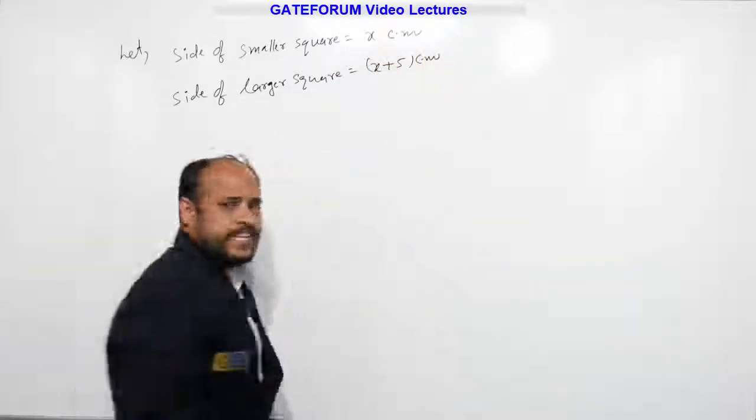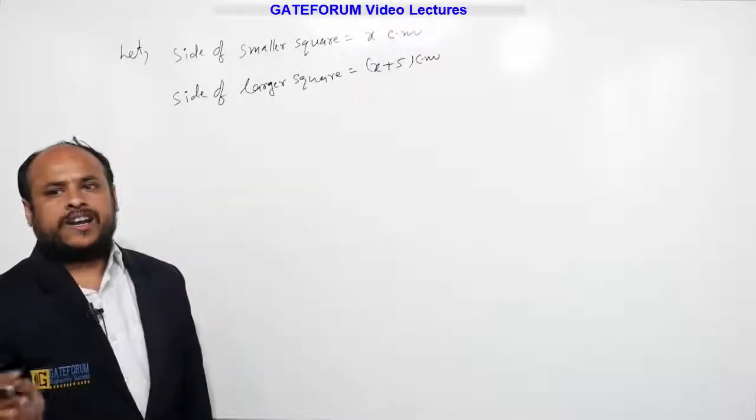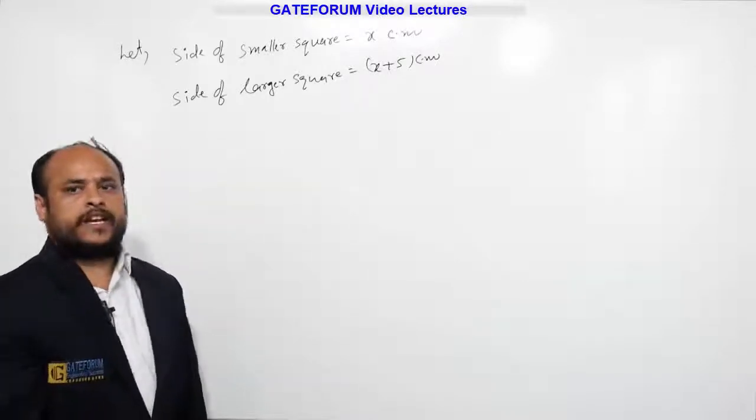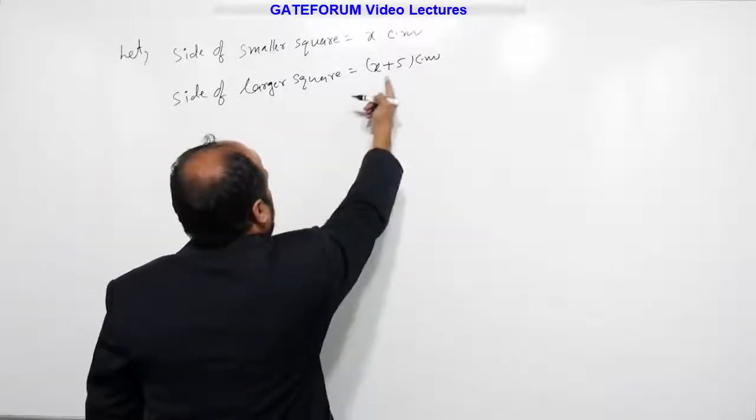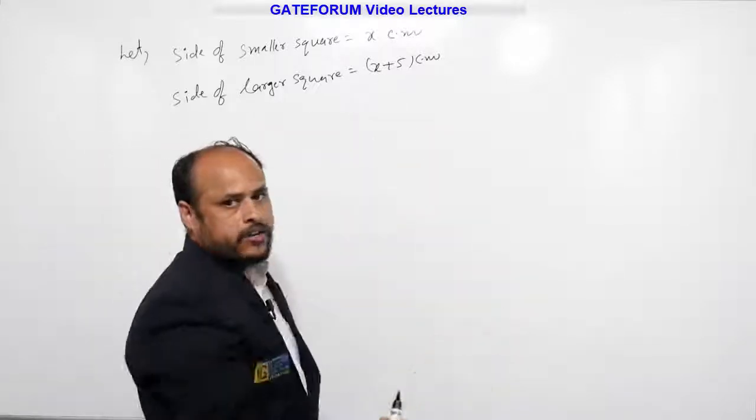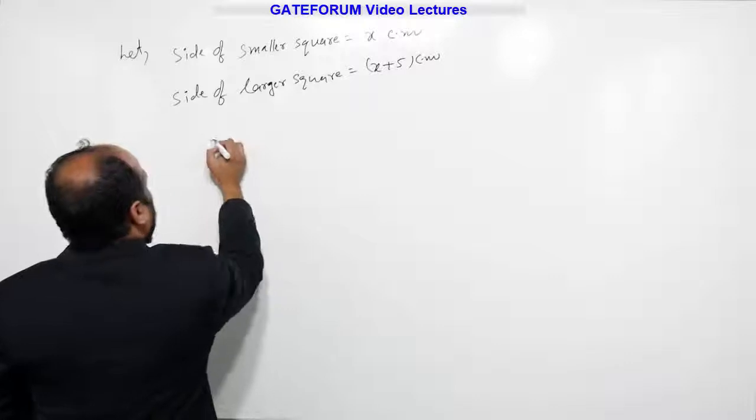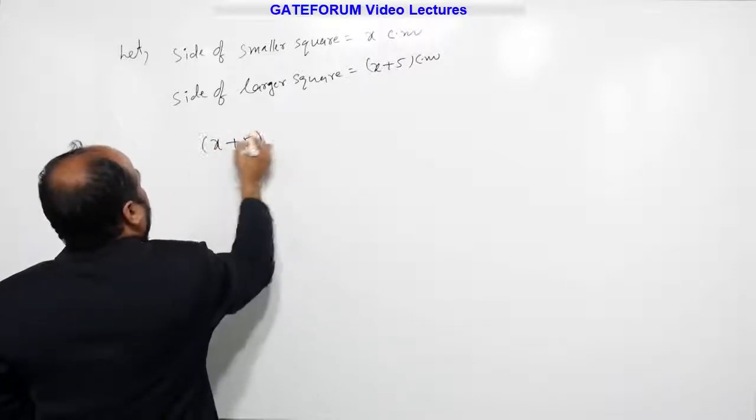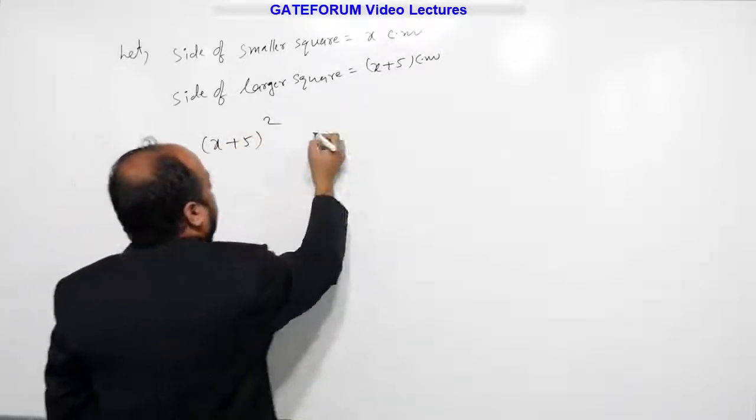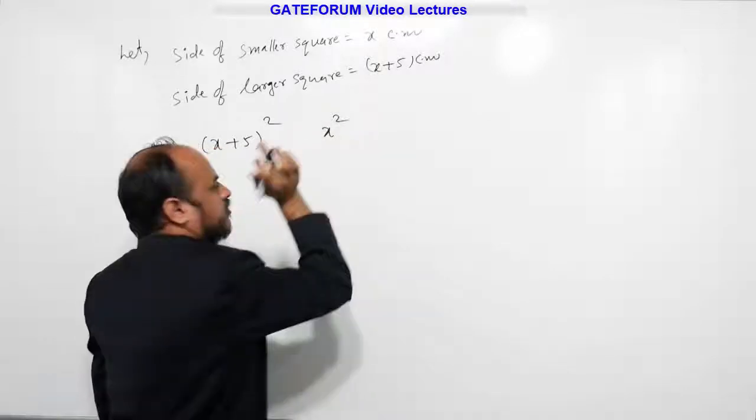And one more statement is given here. The area of the larger square is 4 times the area of the smaller square. What is the area of larger square? If you know side, side into side is the area of the square. So x plus 5 whole square is the area of the larger square. x into x is x square, the area of smaller square.